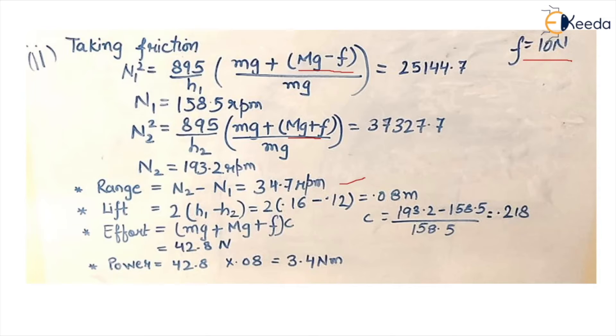So n2 minus n1. Lift is twice of h1 minus h2 we have already discussed.